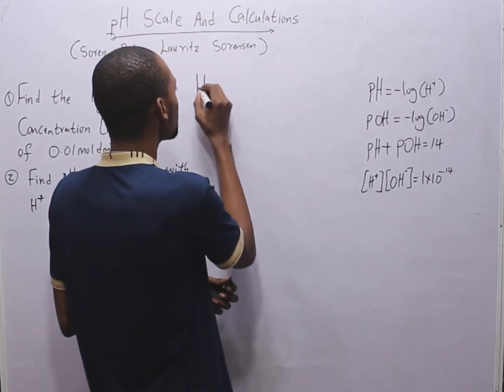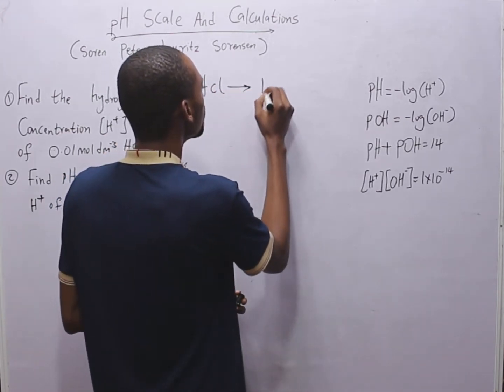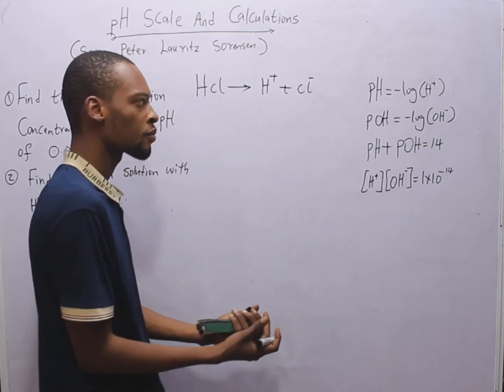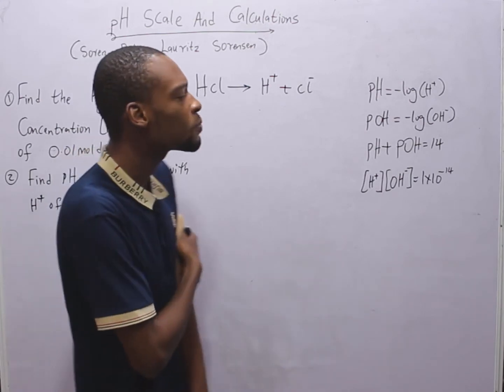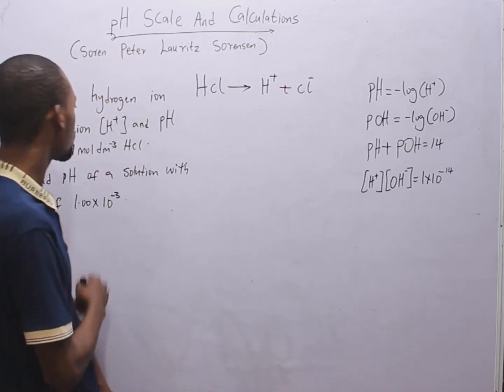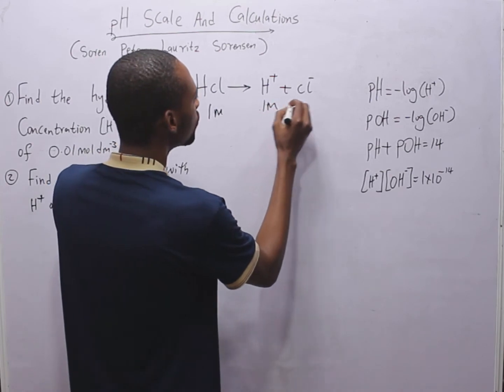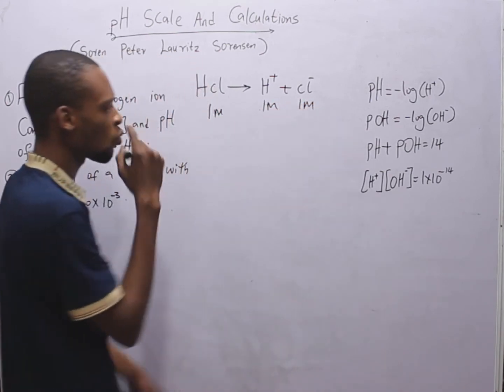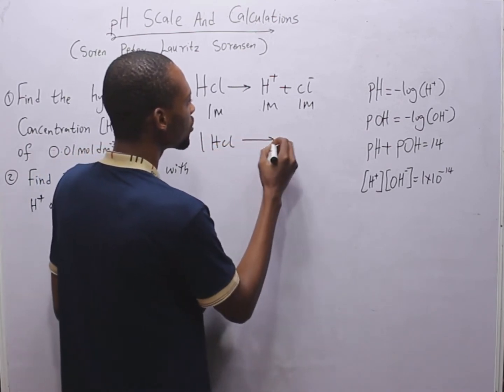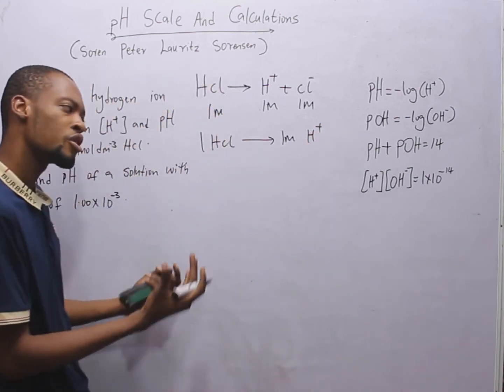So, if you have HCl, this can break down to give you, let's say, H plus plus Cl minus. So, this is one mole, this is one mole, and this is one mole. What does this imply?